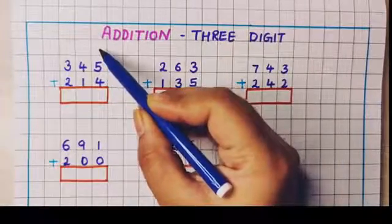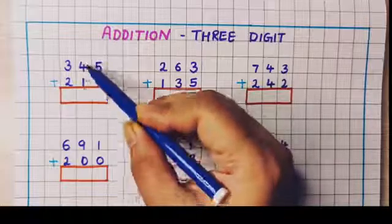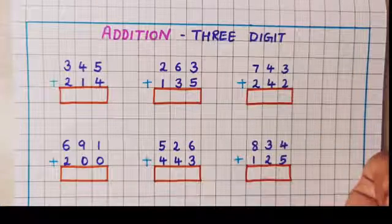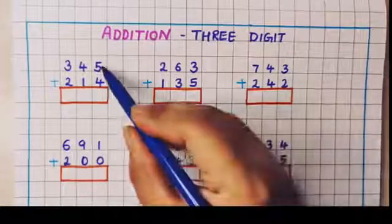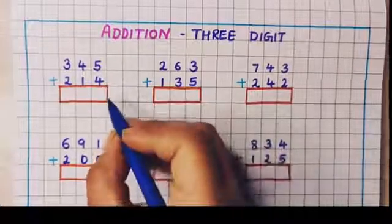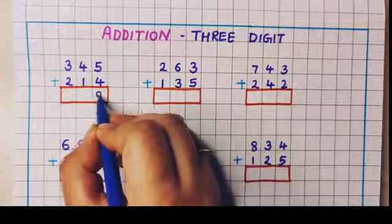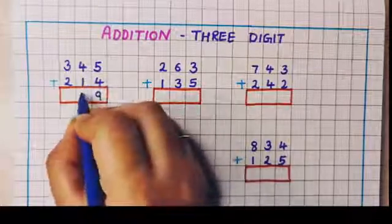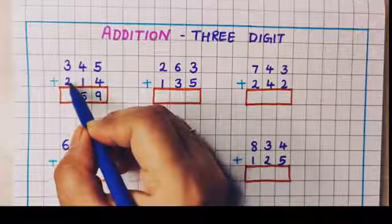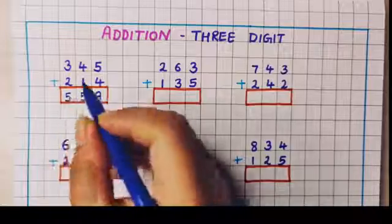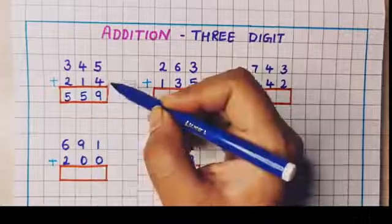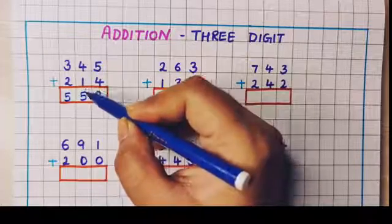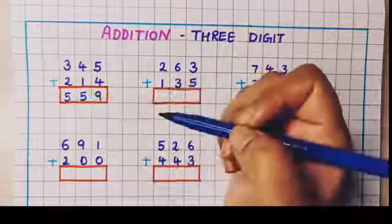First we will start with the addition of the ones place numbers, then the tens place numbers, and then the hundreds place numbers. Now let's understand with one example. 5 plus 4 is 9, so I will write 9 here. Then we add the tens digit numbers: 4 plus 1 is 5. And then 3 plus 2 is 5 again. So the answer is 559. First we do the addition of the ones place digit, then the tens place, and then the hundreds place.